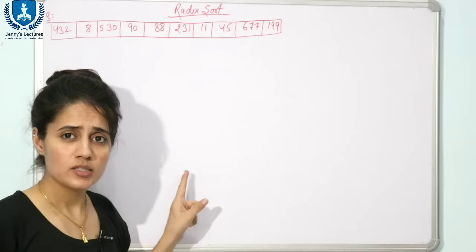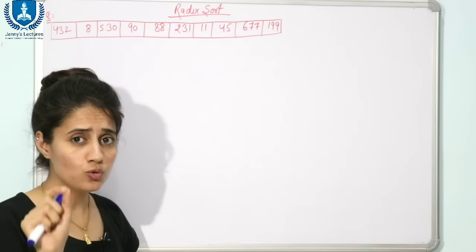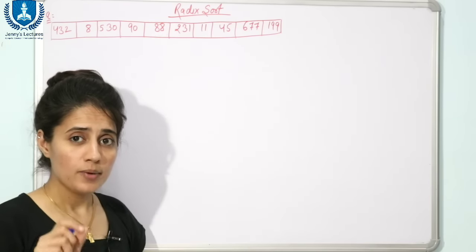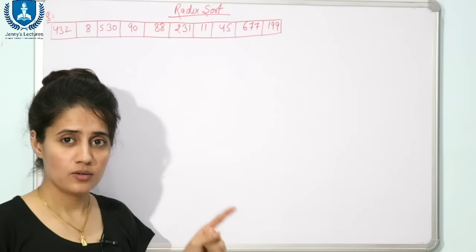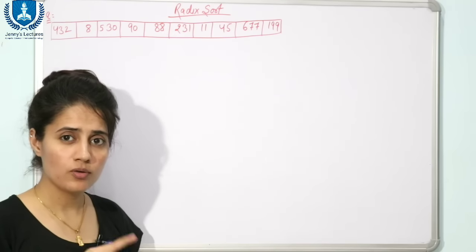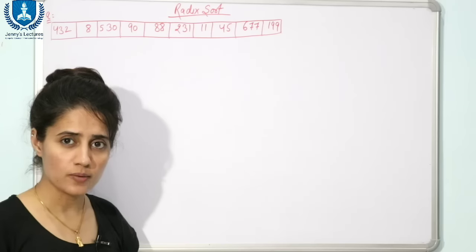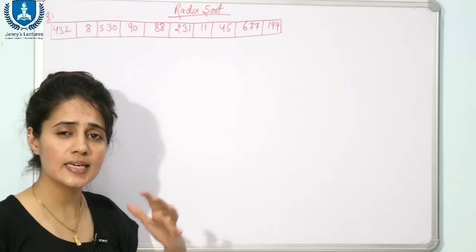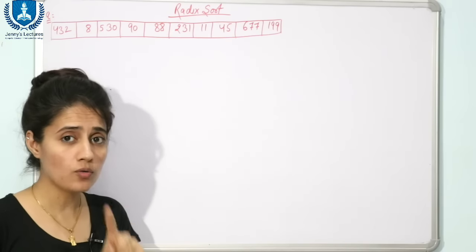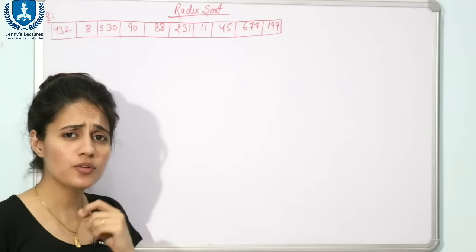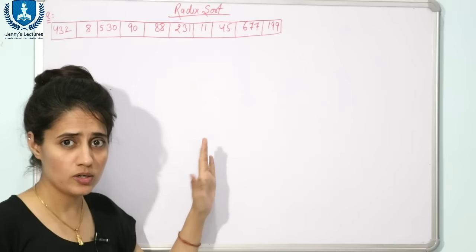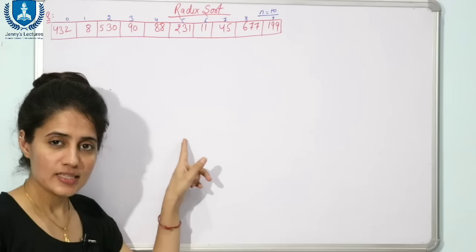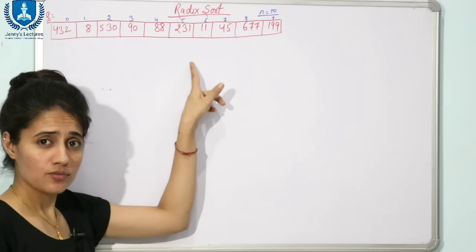The prerequisite for Radix Sort is Counting Sort, because we are going to use Counting Sort as a subroutine in Radix Sort. I recommend you go through that video first. I have uploaded it and will provide the link in the description box. If you know how Counting Sort works, you can easily understand Radix Sort.